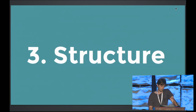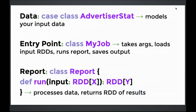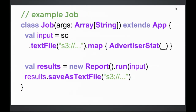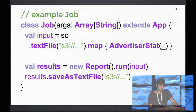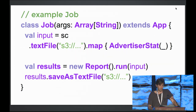For how we structure our Spark jobs, we typically have three different classes: data classes like the AdvertiserStat case class, job classes that serve as the entry point — they take arguments, load the input RDDs from S3, and then run our report class. The report class just takes an input RDD and returns an output RDD. That makes it easy to test. In the job, you load an RDD of strings from S3, map it into AdvertiserStats, run your report, get the results, and save them as a text file back to S3.